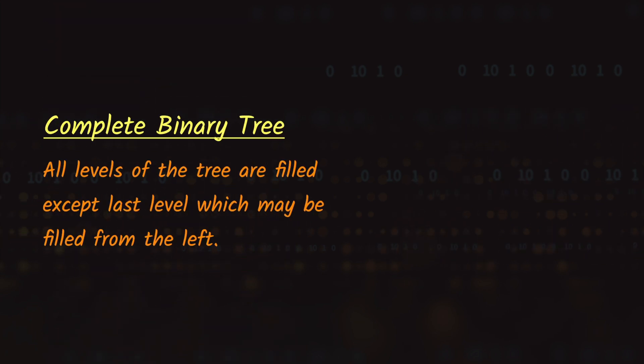Next we have the complete binary tree. In a complete binary tree, all the levels of the tree are fully filled except the last level, which can be partially filled. But the condition is that any nodes on the last level must be on the leftmost positions. All tree levels are to be fully filled, and the nodes on the last level should be on the far left side.